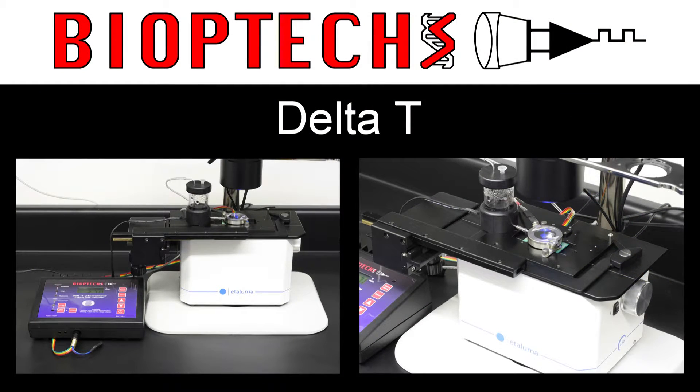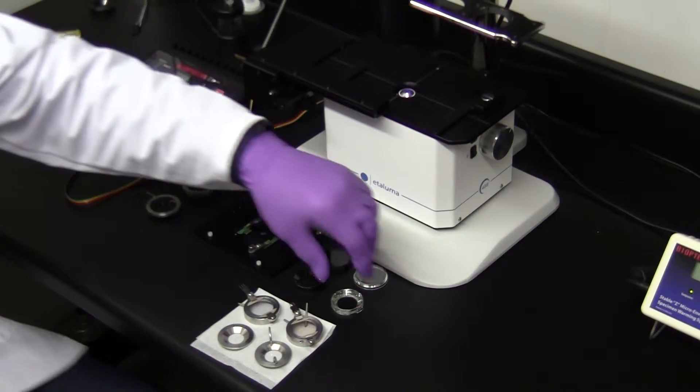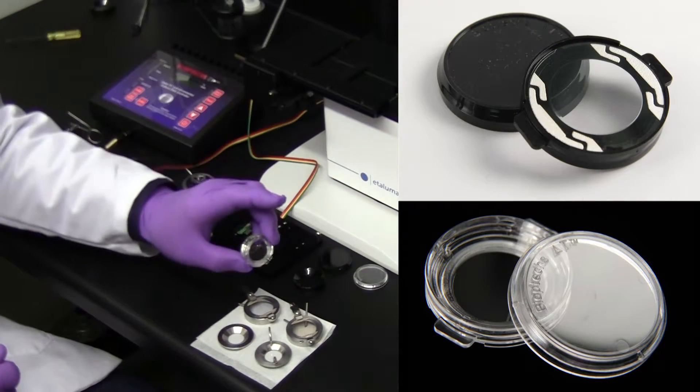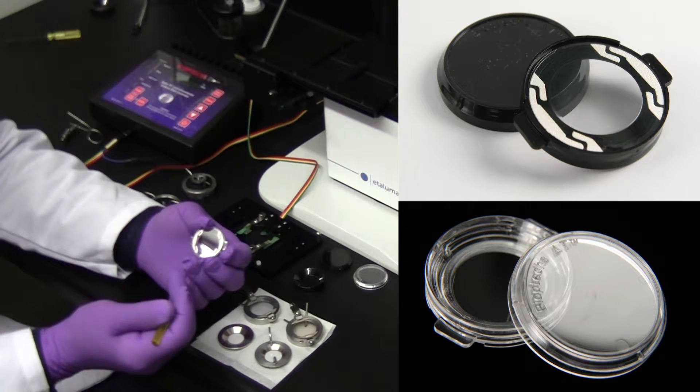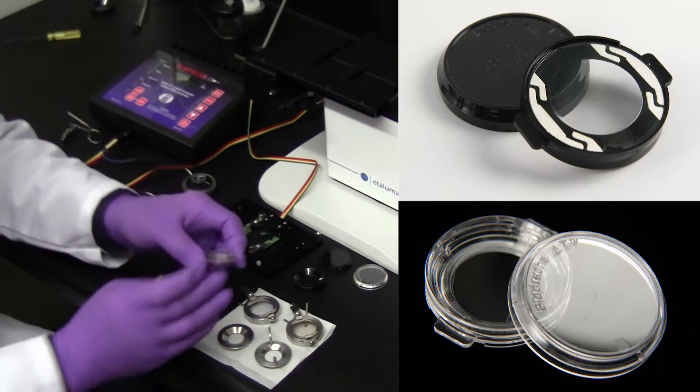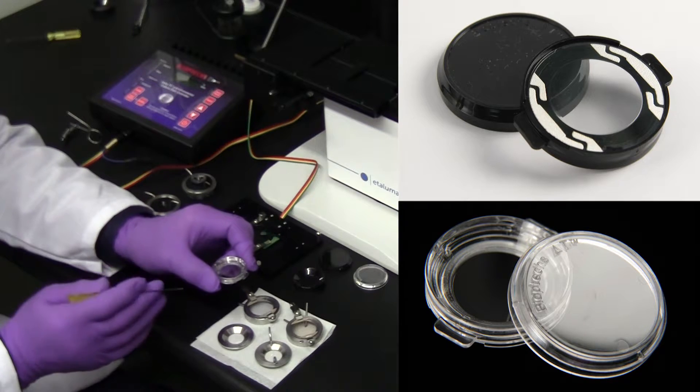Here we have a Delta-T system on an Etaluma microscope. The Delta-T is based on a 35mm coverslip bottom culture dish having integrated temperature control. The bottom surface of the coverslip is coated with indium tin oxide and a special geometry of conductive bus bars.